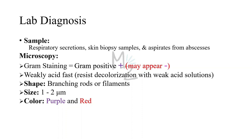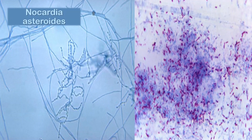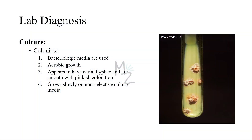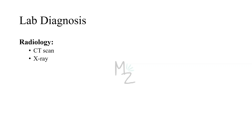On microscopy, Nocardia asteroides is rod-shaped, forms branching filaments, and varies from 1 to 2 micrometers. It appears purple with gram stain and red with acid fast stain, as visible in the picture. For culture, colonies are formed on bacteriologic media with aerobic growth. Using Lowenstein-Jensen agar, colonies are smooth, mold-like, and exhibit a pinkish coloration, growing slowly on non-selective media. Radiology — CT scan and X-ray — is used to identify cavitations and lesions in the brain and lungs.